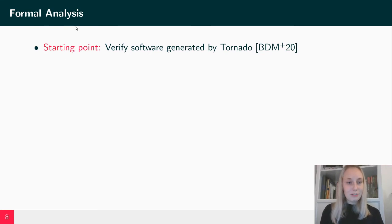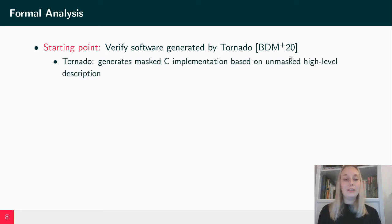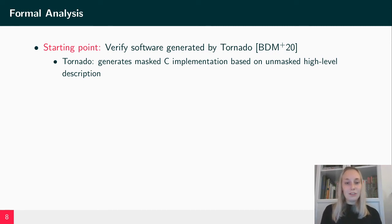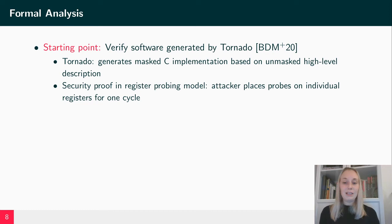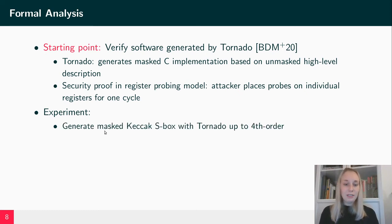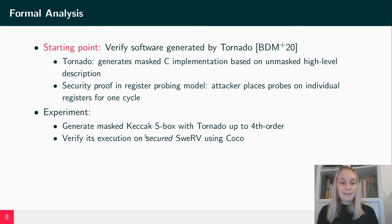Now let's start with the actual formal analysis. We have our secured Swerve core and we want to verify software generated by Tornado as a starting point. Tornado is a tool that generates masked-C implementations based on unmasked high-level descriptions of ciphers and also provides a security proof in the register probing model — a probing model often chosen for masked software in which an attacker can place a probe on a specific register for one cycle. In our experiment, we generate four different masked S-Box implementations with Tornado, each referring to one masking order, and use COCO to verify their execution on the secured Swerve core.